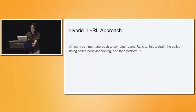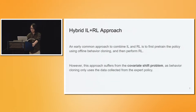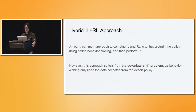The imitation learning step they use is a special case called behavior cloning. It asks the expert to do some demonstrations, collects data, solves a supervised learning problem, and uses that as an initial condition before running RL. But this approach has a drawback: the covariate shift problem, because you only collect data on the distribution visited by the expert. If you have error in the supervised learning step, the error will compound and lead to worse performance.